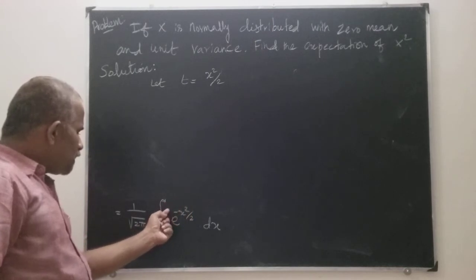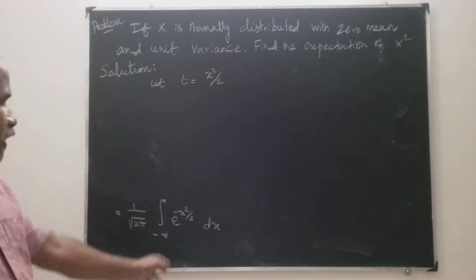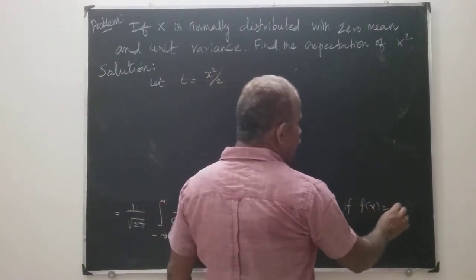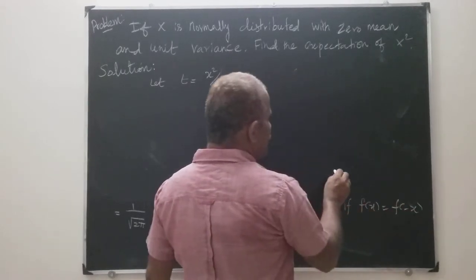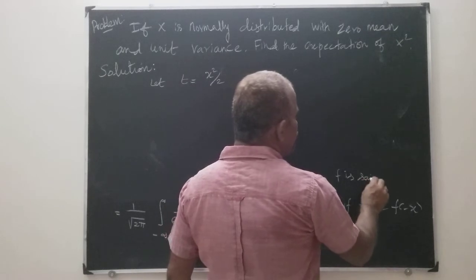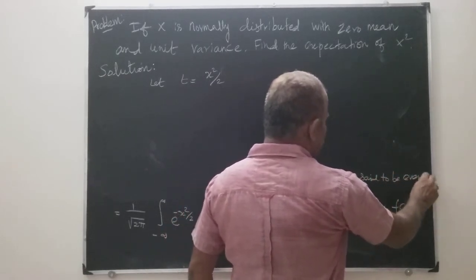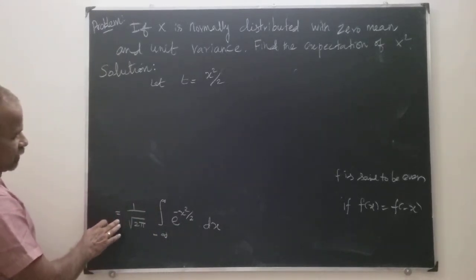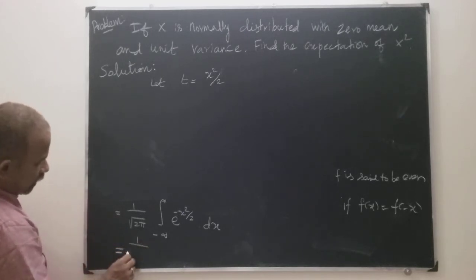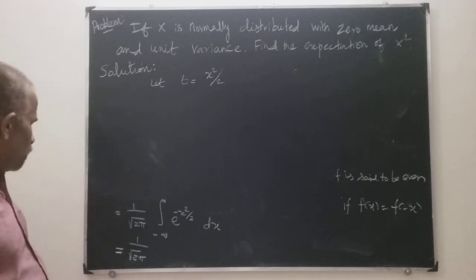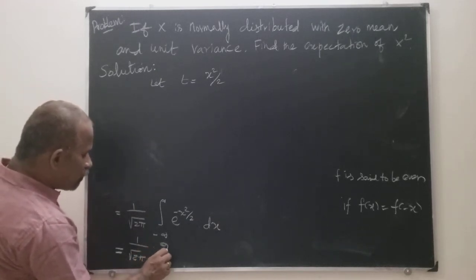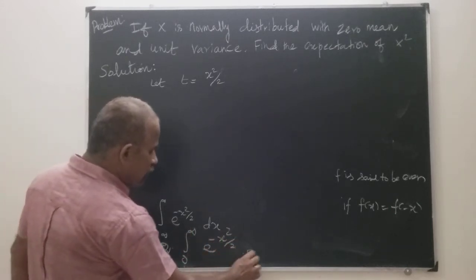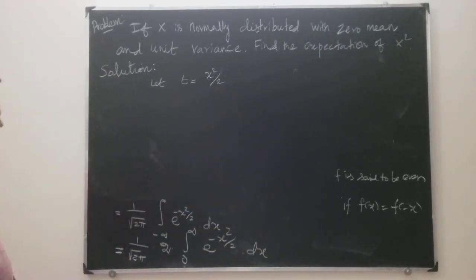Now, e to the power minus x squared by 2 is an even function. An even function means f(x) = f(−x). Since this function is even, I can write this as 1 by square root of 2π, into 2 times the integral from 0 to infinity of e to the power minus x squared by 2 dx.